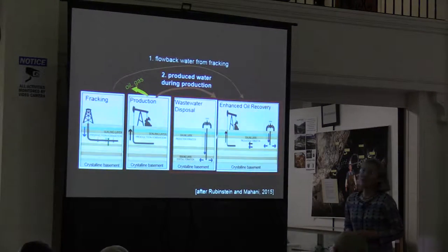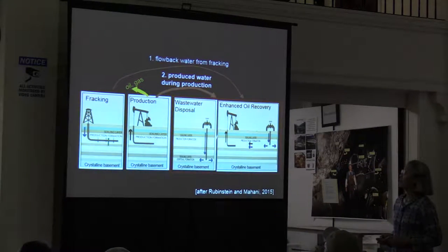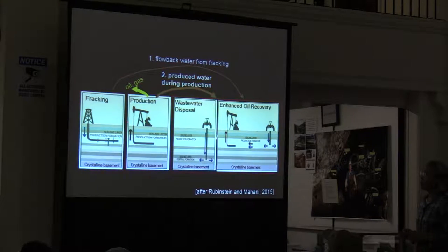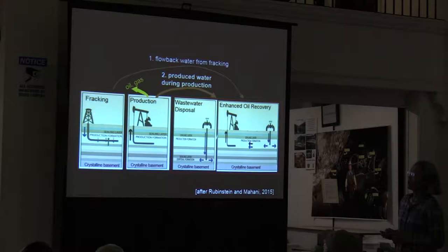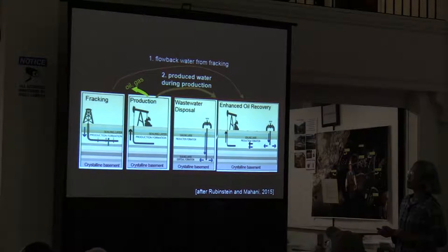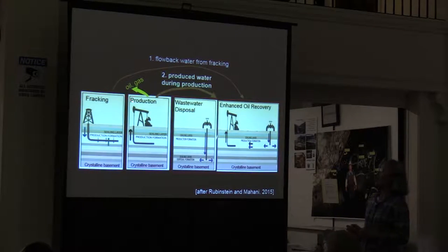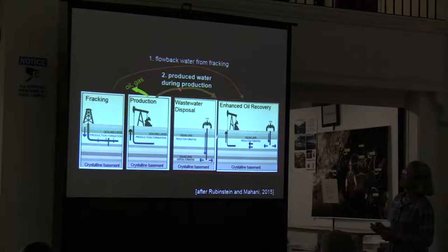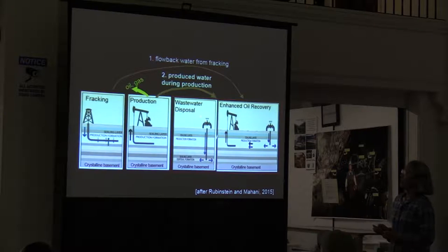I'd like to use a couple of slides to look at background about wastewater production. There are basically two sources of wastewater. One is the flow-back water from the fracking process — once the fracking job is done, the fluid comes back. The other source is produced water: during production, what's extracted to the surface is a mixture of oil, gas, and water; on the surface you separate oil and gas, and the leftover water becomes produced water.